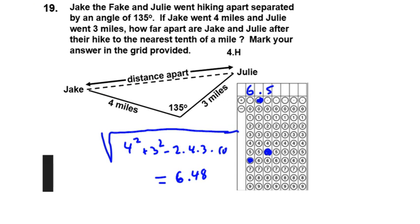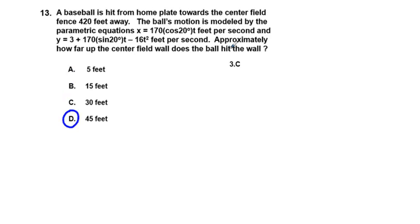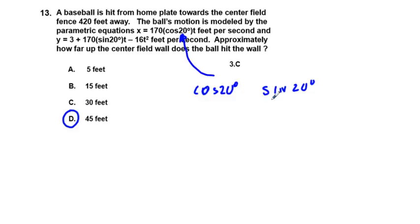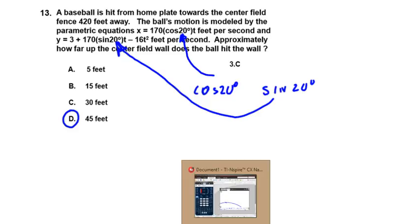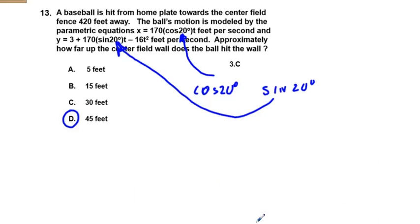A word of warning on the baseball problem: you have to find the cosine of 20 degrees and the sine of 20 degrees and plug them into the parametric equations, or you'll get an incorrect answer. Tracing that out gives 45 feet. That's the test — I think most had good scores, a couple people missed only three. Good luck on the next test, and thanks for viewing!